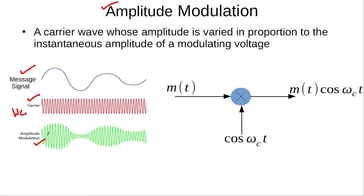This modulated signal has the frequency omega_c, but the information in the message is contained in the envelope of this signal. This type of signal is called the amplitude modulated signal because the amplitude of the carrier is varying in accordance with the change in the message signal.